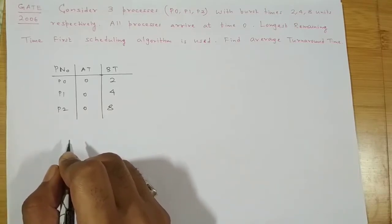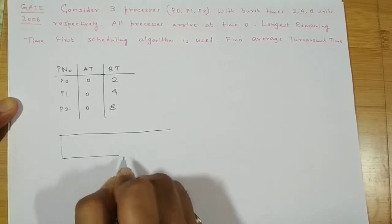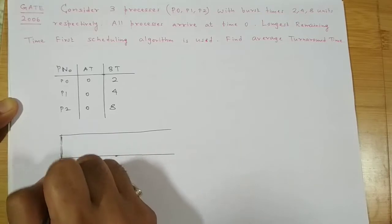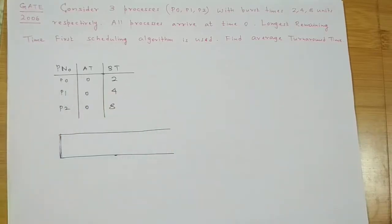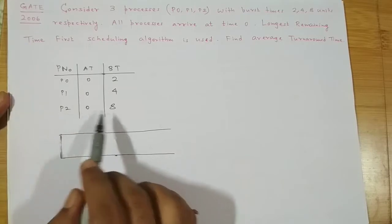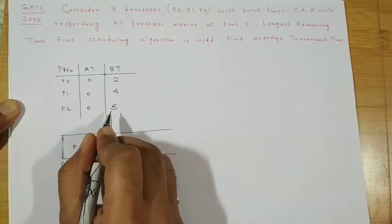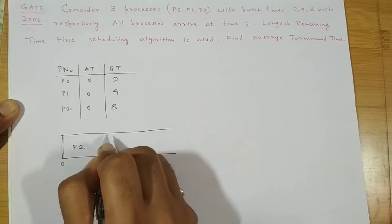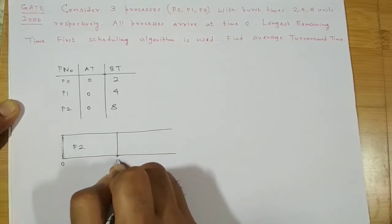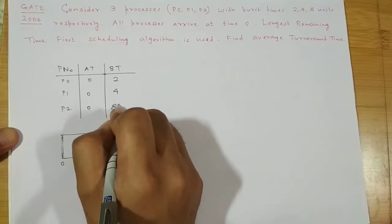We make use of a Gantt chart to solve this. Since we are going with Longest Remaining Time First, the process with the maximum burst time is scheduled first. Process P2 has a remaining burst time of 8 units, so P2 will be scheduled first. It will be scheduled for 4 units, at which point P2 has a remaining burst time of 4 units.